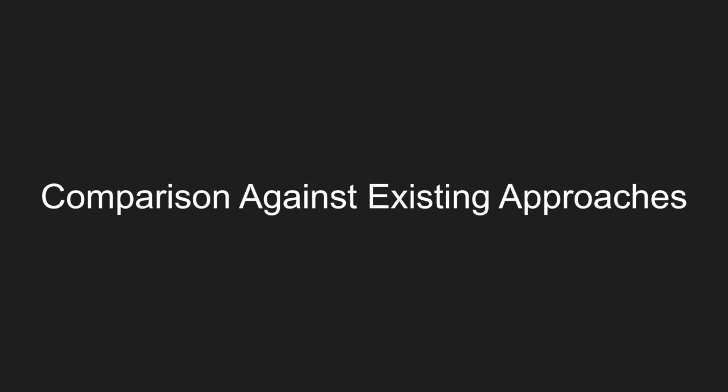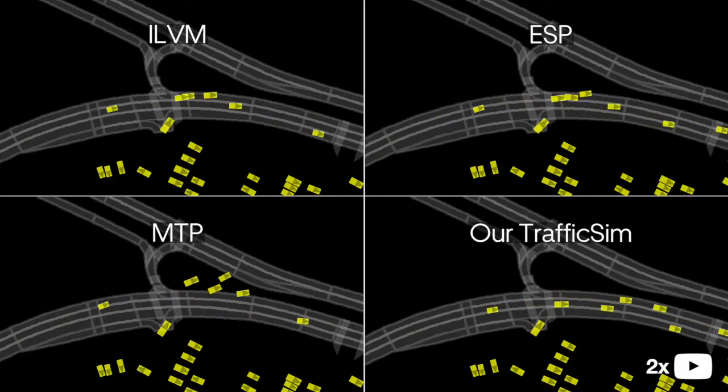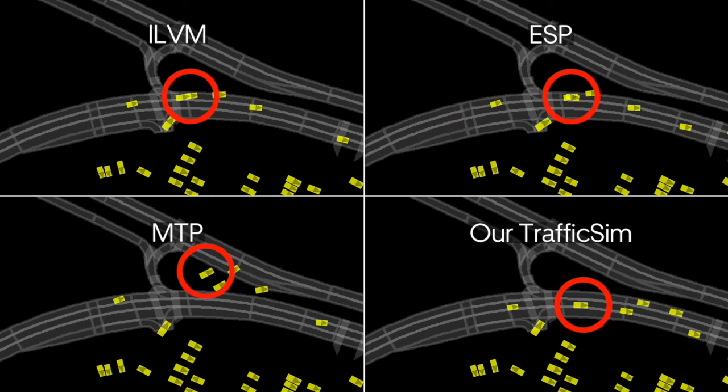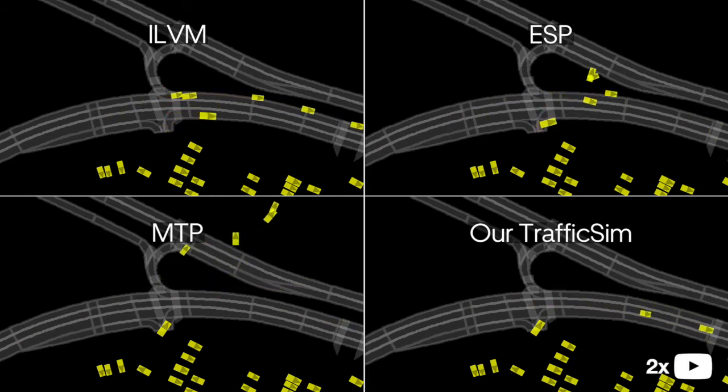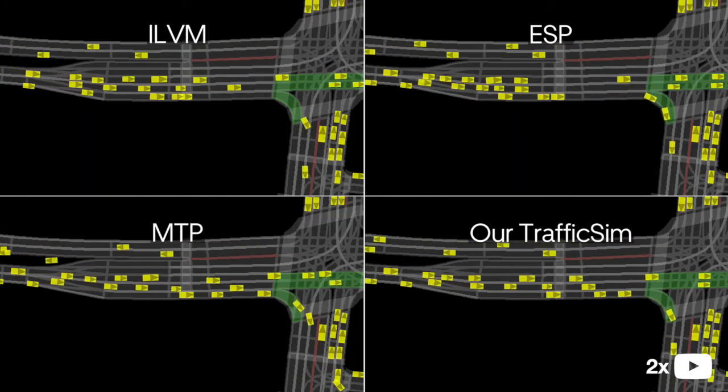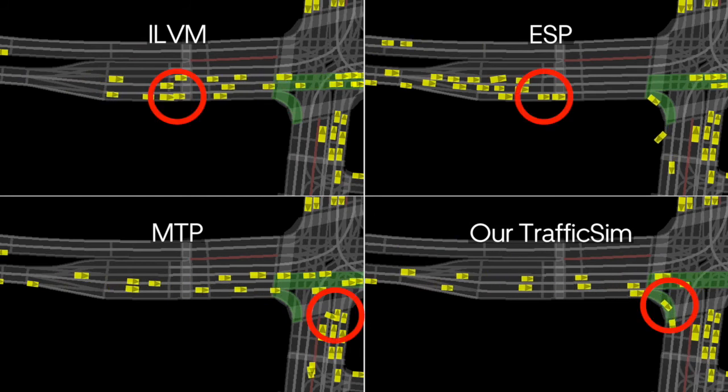In this segment, we compare our method to existing approaches. In comparison to motion forecasting baselines, our method is much more robust for simulation over a long time horizon. It generates realistic actor behaviors, avoids collision, and follows traffic rules.